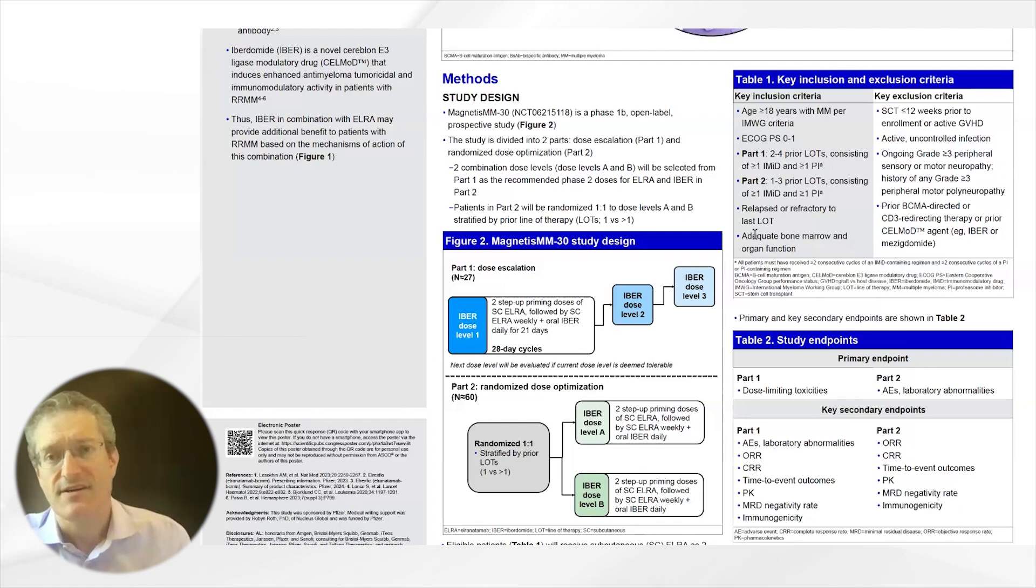The key inclusion criteria for this study shown in table one include individuals with myeloma. For part one, those that have received two to four prior lines of therapy consisting of an IMiD and PI. In part two, one to three prior lines of therapy consisting of an IMiD and PI.